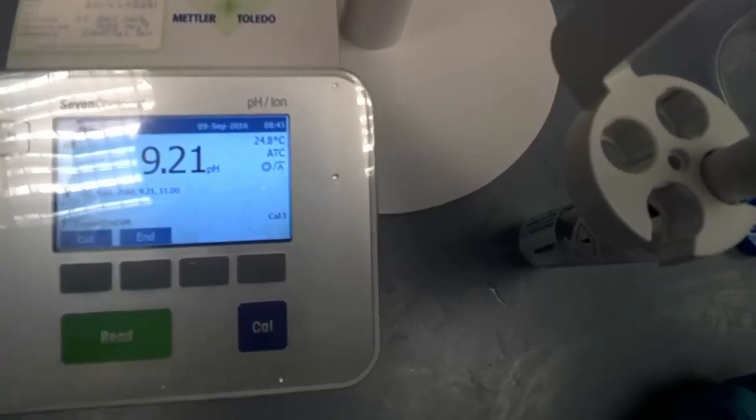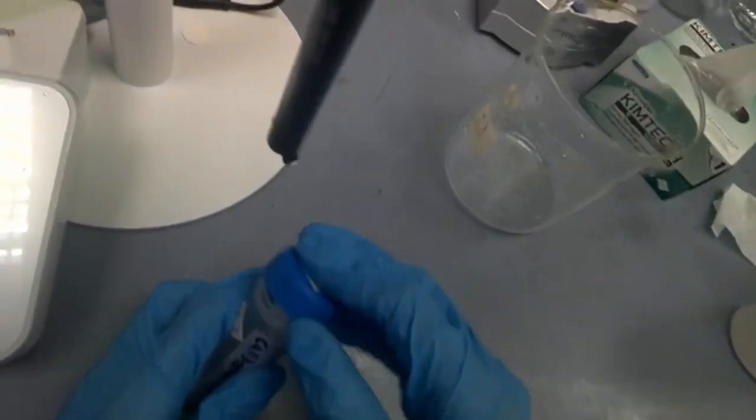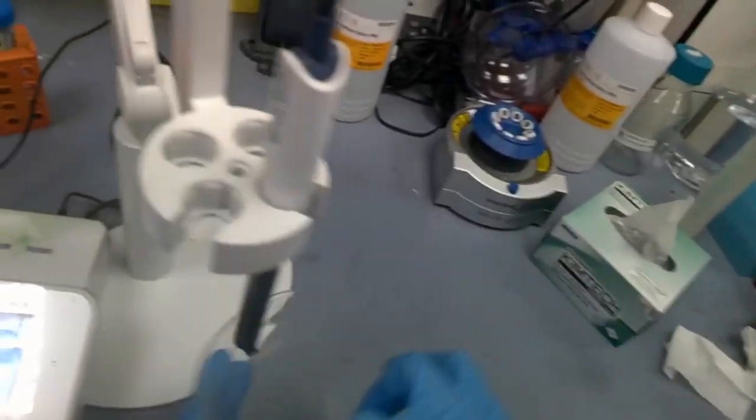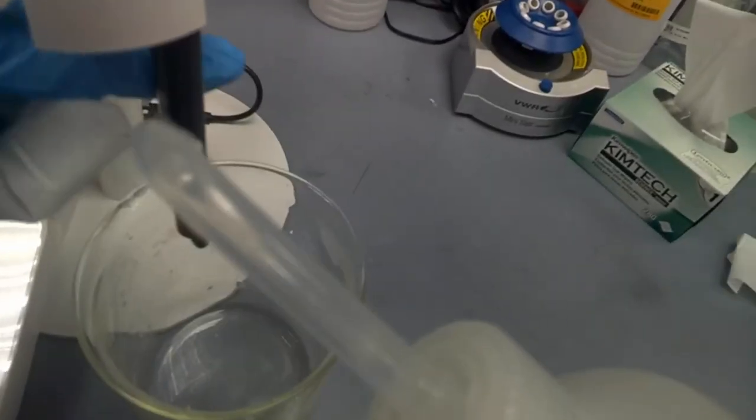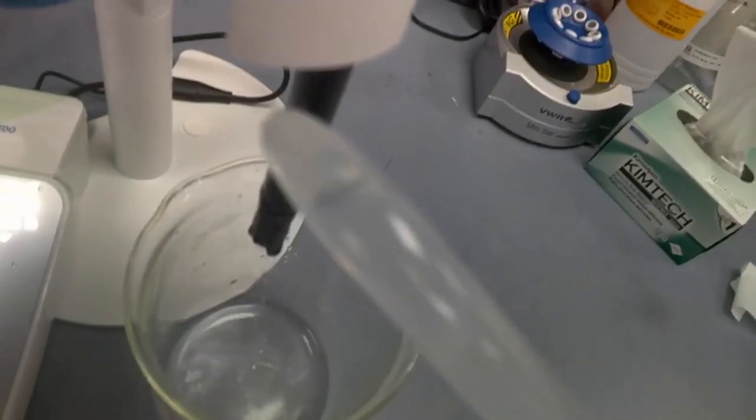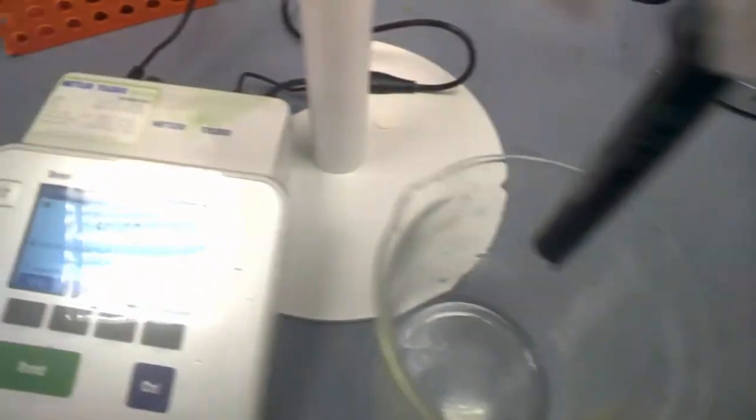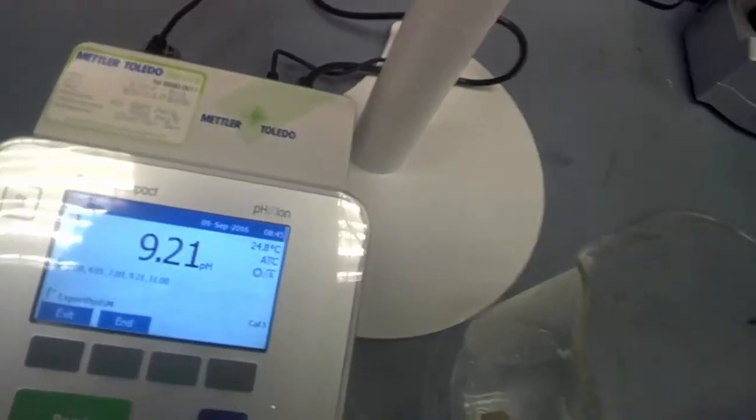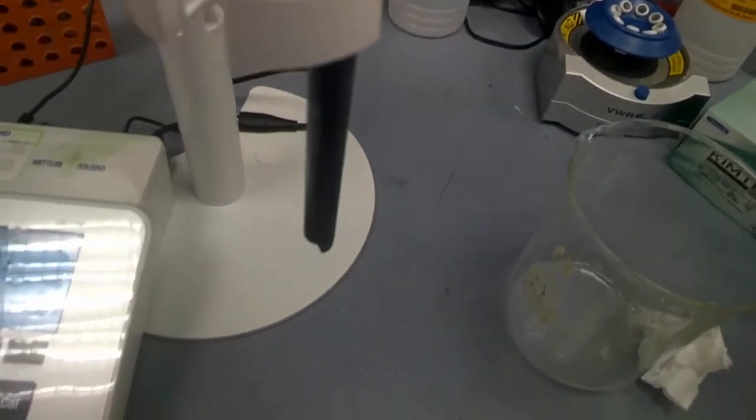It's 9.21. This time it's very fast. It's all done. So good. Now you remove the probe from the pH solution. Put it back to the stand. And before you measure the pH of the sample, don't forget to rinse it with distilled water, deionized water. Kim wipe. Be very careful. This is very delicate. Good. So now, let's say I have a sample of solution I want to measure.